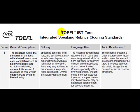Let's take a look at the rubric. This is called the TOEFL IBT Test Integrated Speaking Rubrics, the Scoring Standards. This is the criteria that ETS will use to grade your speaking tasks for the integrated speaking tasks. First, score four. General Description: the response fulfills the demands of the task with at most minor lapses in completeness. It is highly intelligible and exhibits sustained, coherent discourse. A response at this level is characterized by all of the following in delivery, language use, and topic development.